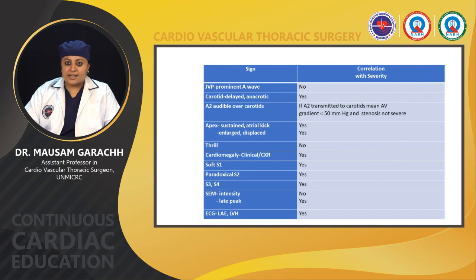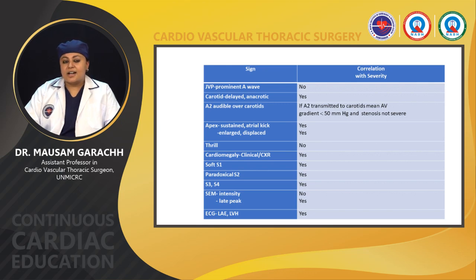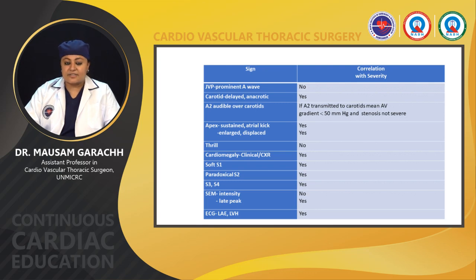A table showing signs and their correlation with severity: JVP prominent A wave is not related to severity. Carotid delay and anacrotic pulse are related to severity. Audible A2 over carotids is not related. Sustained apex is related. Enlarged and displaced apex is related. Presence of thrill is not related to severity. Cardiomegaly, soft S1, paradoxical S2, S3 and S4 are all related to severity. Murmur intensity is not related to severity, but late peaking is associated with severity. On ECG, signs of left atrial enlargement and left ventricular hypertrophy are related with severity.